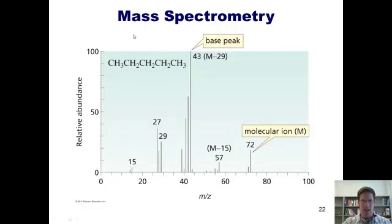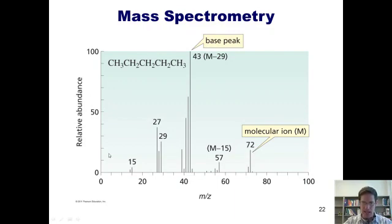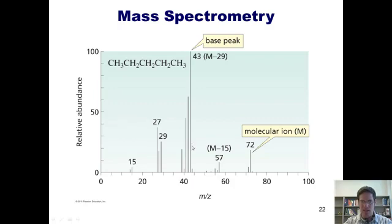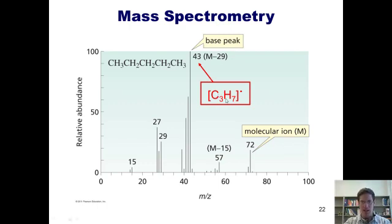Here's the mass spectrum for pentane. The molecular ion peak M, also called the parent peak, is shown right here — it corresponds to 72, the molecular weight of pentane. The M peak is not the tallest peak in this mass spectrum. The tallest peak, or base peak, is 43, which corresponds to a radical propane fragment, C3H7. So when pentane gets chucked into the mass spec, the most stable fragment that comes out is this propane fragment.